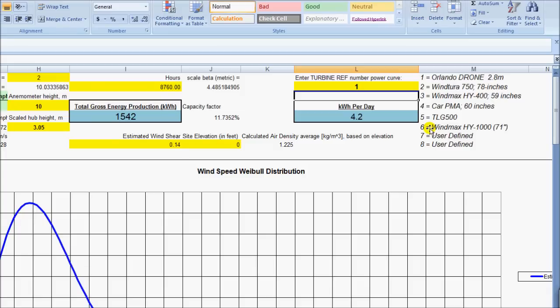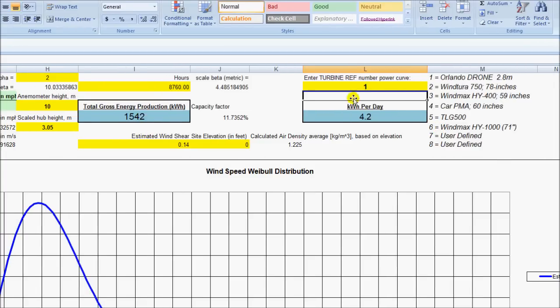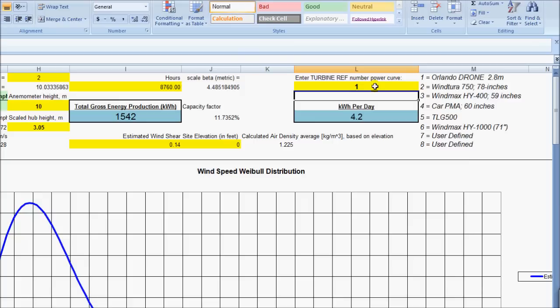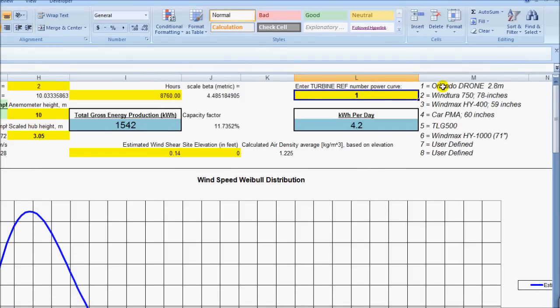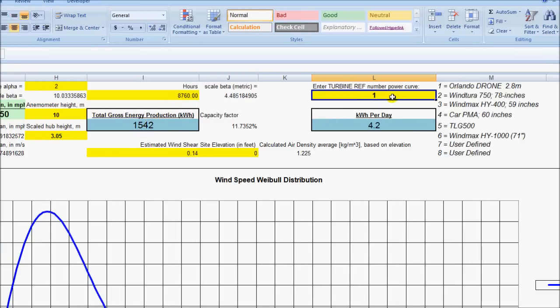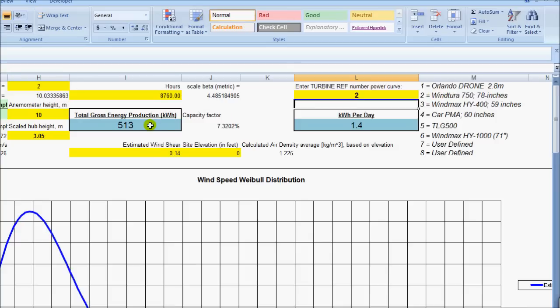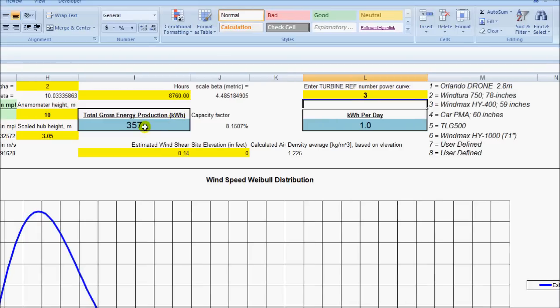So that you can determine what your annual production is. I can just change this value here in this spot to go from the example here with the drone generating 1542 kilowatt hours in a year to maybe the Windchura 750 at 513 or the HY400 at 357.